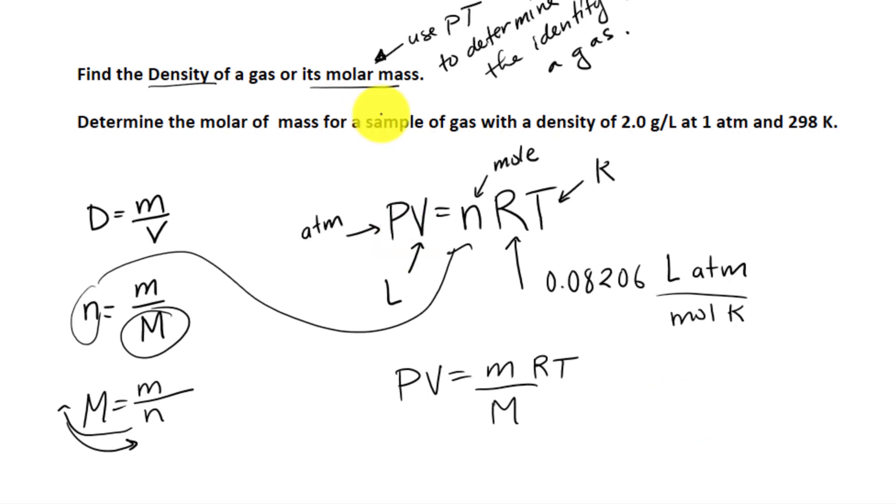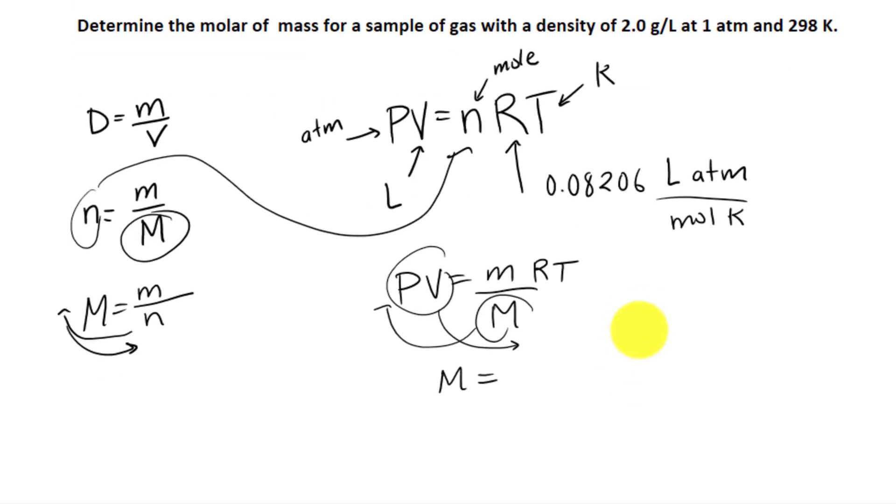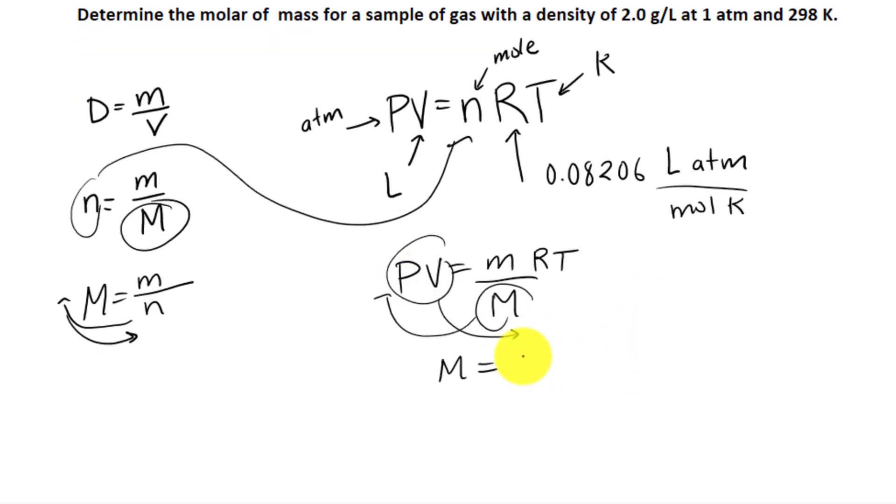The goal is to find the molar mass, right? So in this case, I'm going to bring the molar mass up and bring the PV down. Basic math right there. So now molar mass is equal to mass times RT divided by PV. And that's pretty much it.